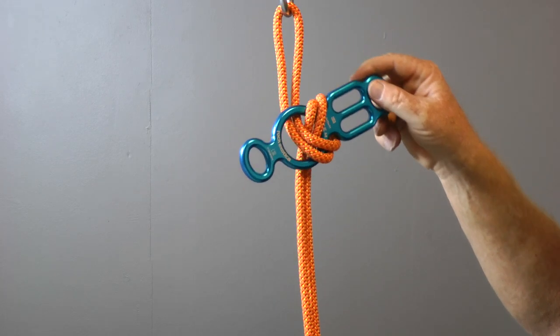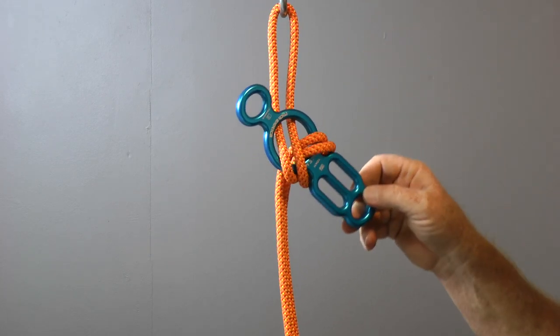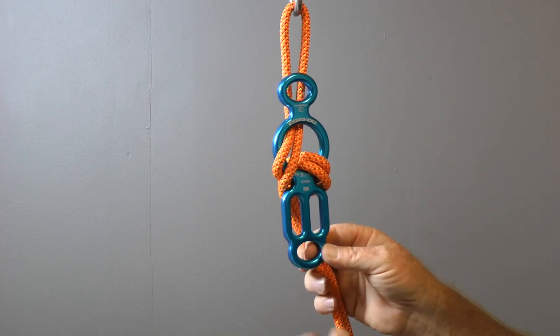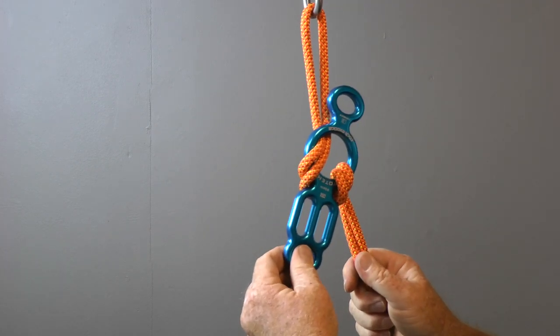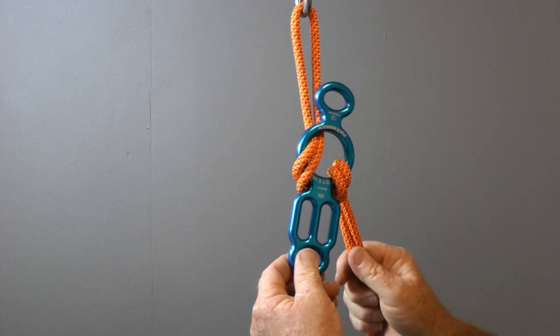I consider the stone totem to be more secure than the original figure eight version, due to the length of the slotted end of the totem. A stone eight can be rigged as quickly as a stone knot. Plus, the last person down simply rotates the device, clips it to their harness, and they're ready for rappel.